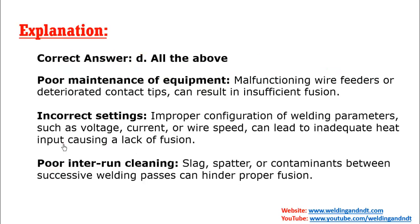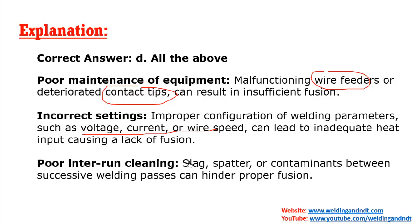If the maintenance of the equipment is not proper, then that will result in malfunctioning of the wire feeder or the contact tip might be deteriorated, which can result in incomplete fusion. Again, if the machine setting is not right — like the voltage, current, or wire feed speed is not correct — then that will also give lack of fusion.